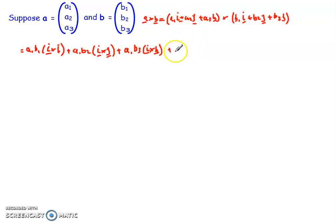What I can then do is work my way through each of the other components. So do the same thing with the a2 j. So I'd end up with a2 b1 i cross j. I'd end up with plus a2 b2 times j cross j plus a2 b3 times j cross k.